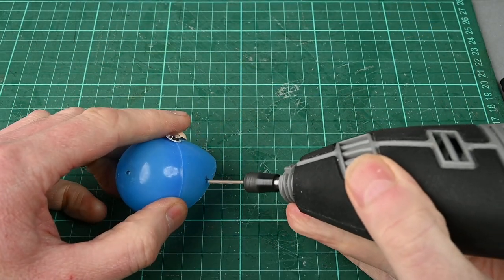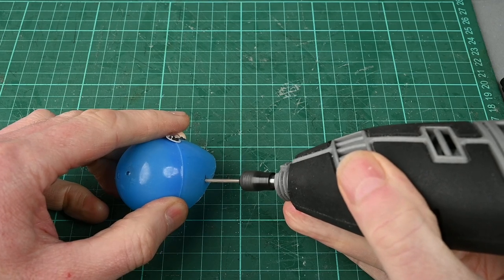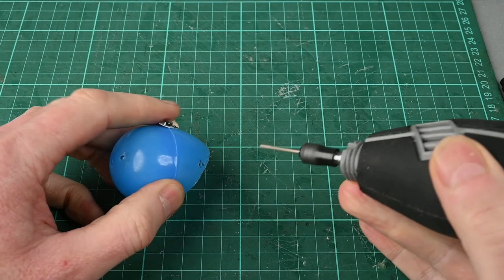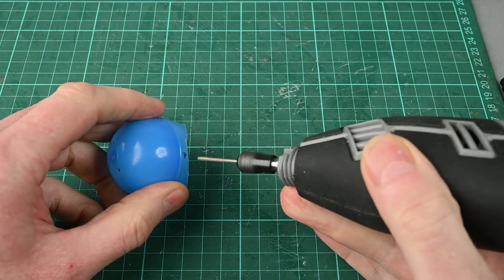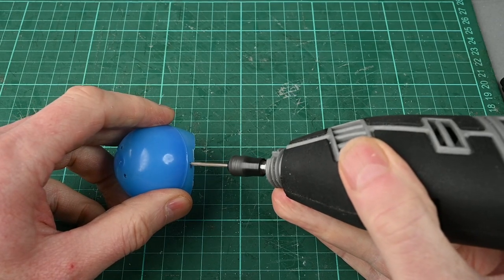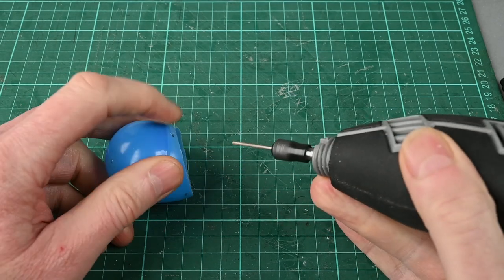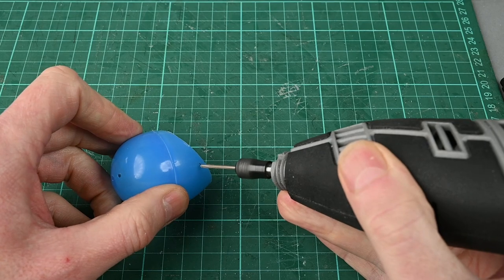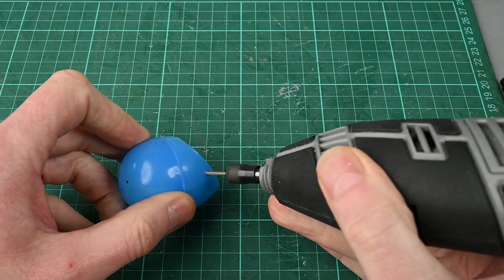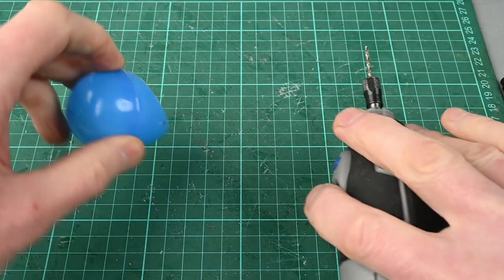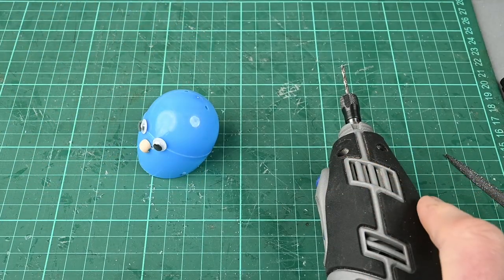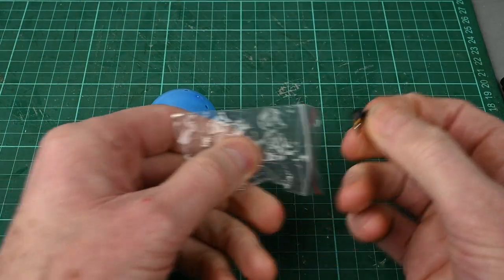I'm using a Dremel here with a 2mm bit and I'm drilling holes around the outside of the model. Again I've marked the place before I've started drilling so that I know where I'm going. I drilled these three holes around it and I'm going to fit three connectors that will hold everything together.